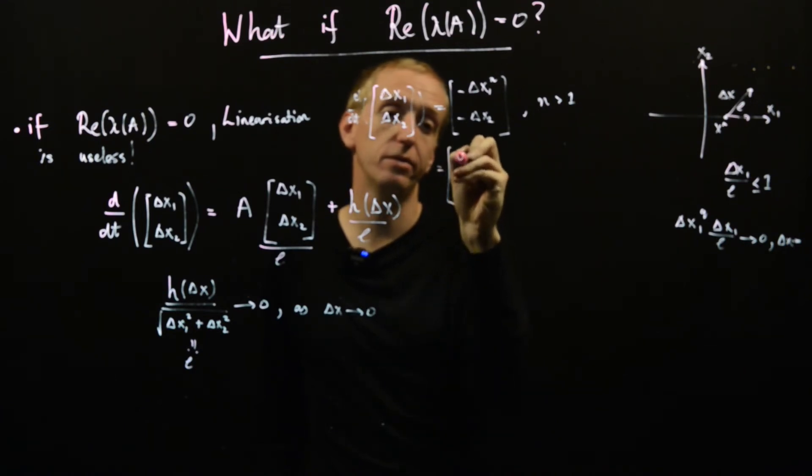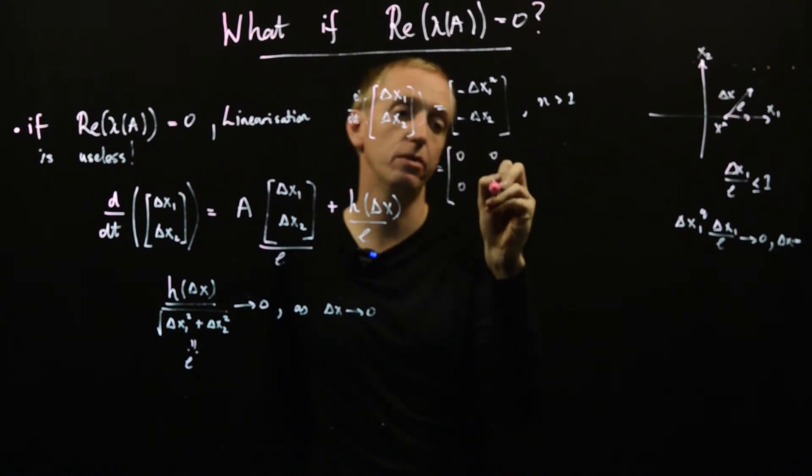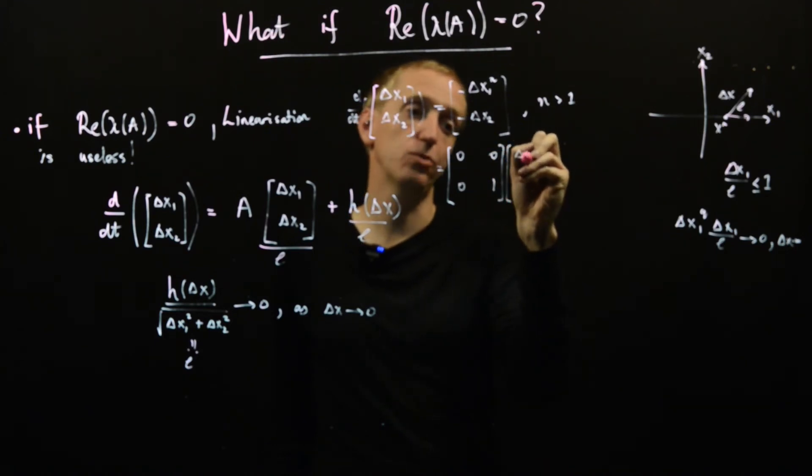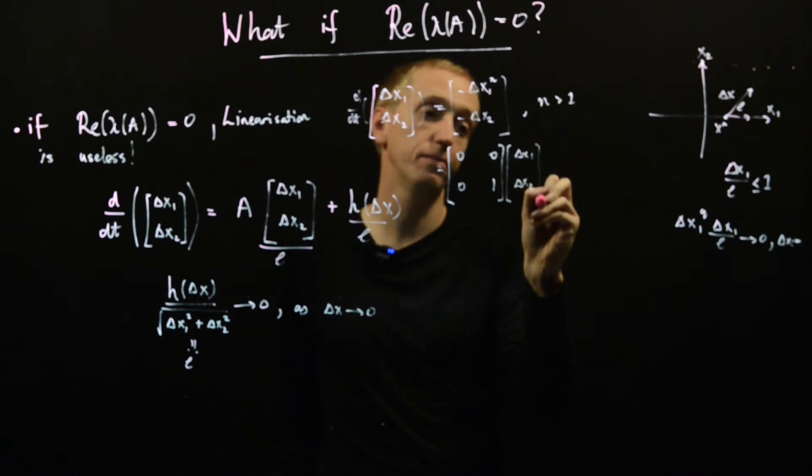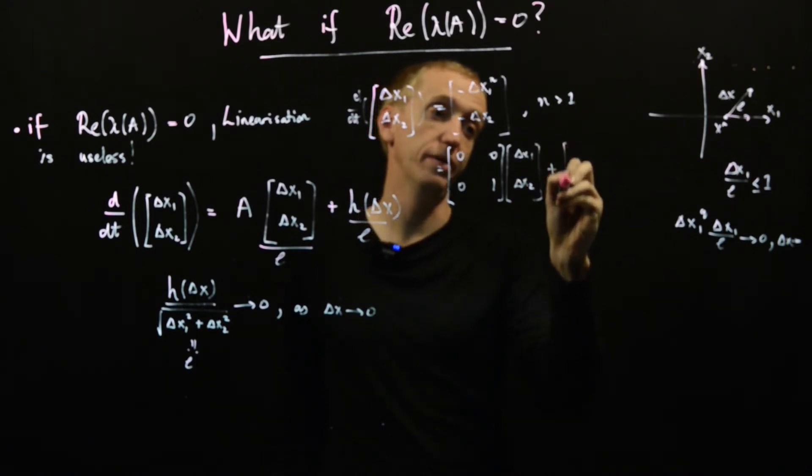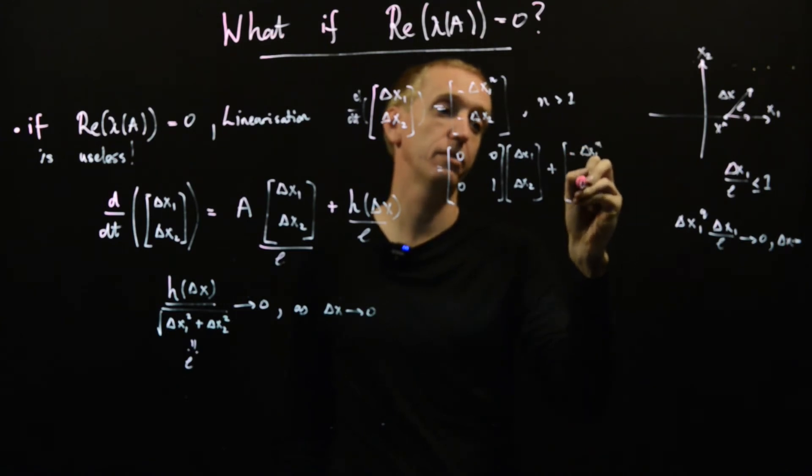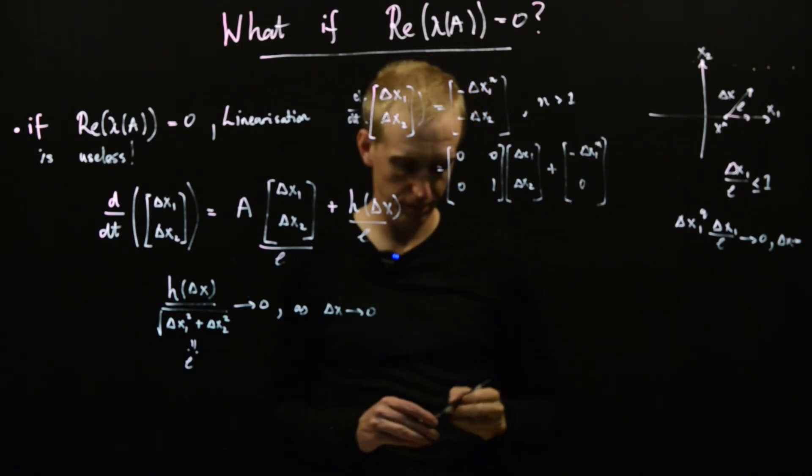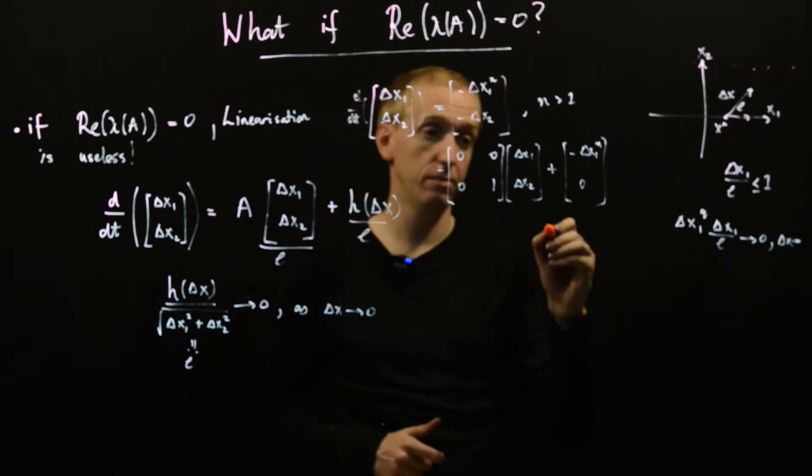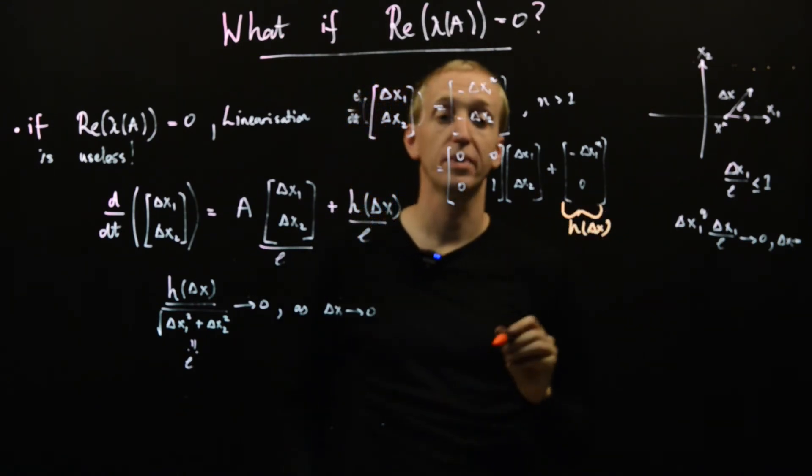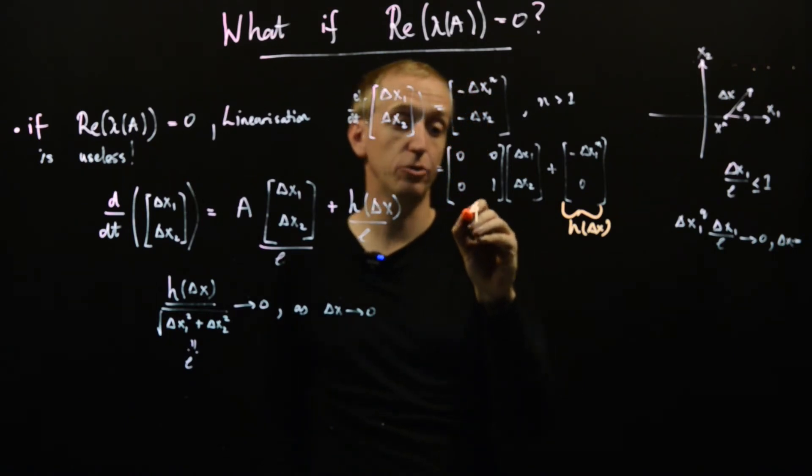And so now we write this in our linearized form, and what do we get? We get 0, 0, 0, 1. And then we have delta x1, delta x2, plus, and then here we have our minus delta x1 to the n. So here we have our, this is our h of delta x, and this is our A matrix.